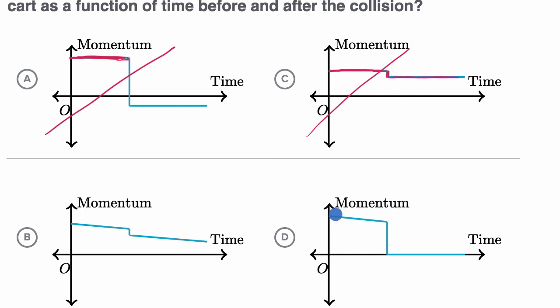Choice D - it's looking good in the beginning, but then it shows that the momentum goes to zero, implying that the left cart just comes to a standstill. And once again, we would not expect that. So we would rule that out.